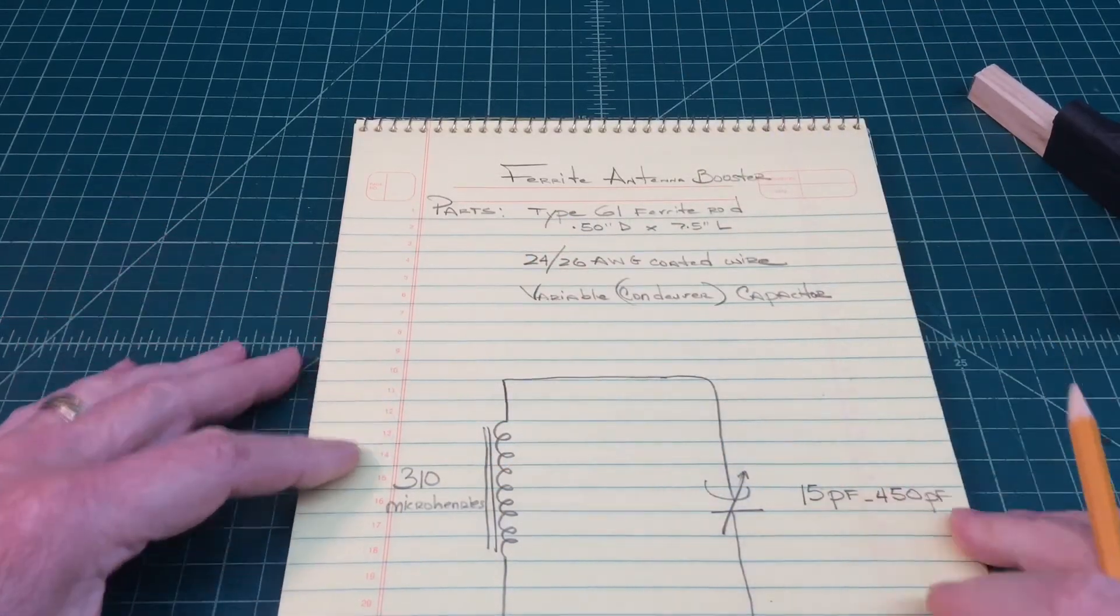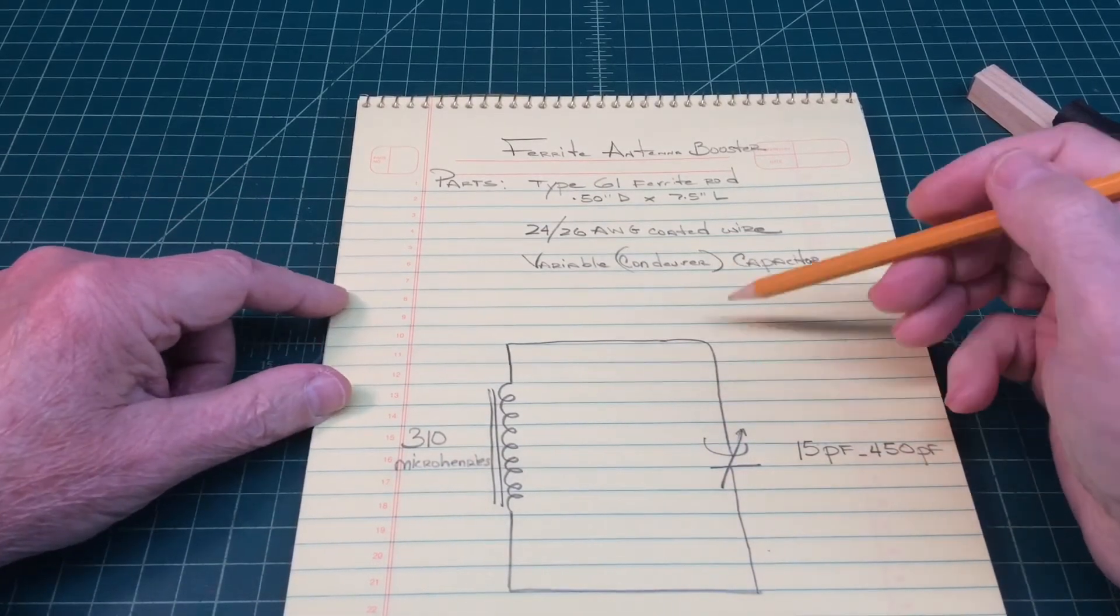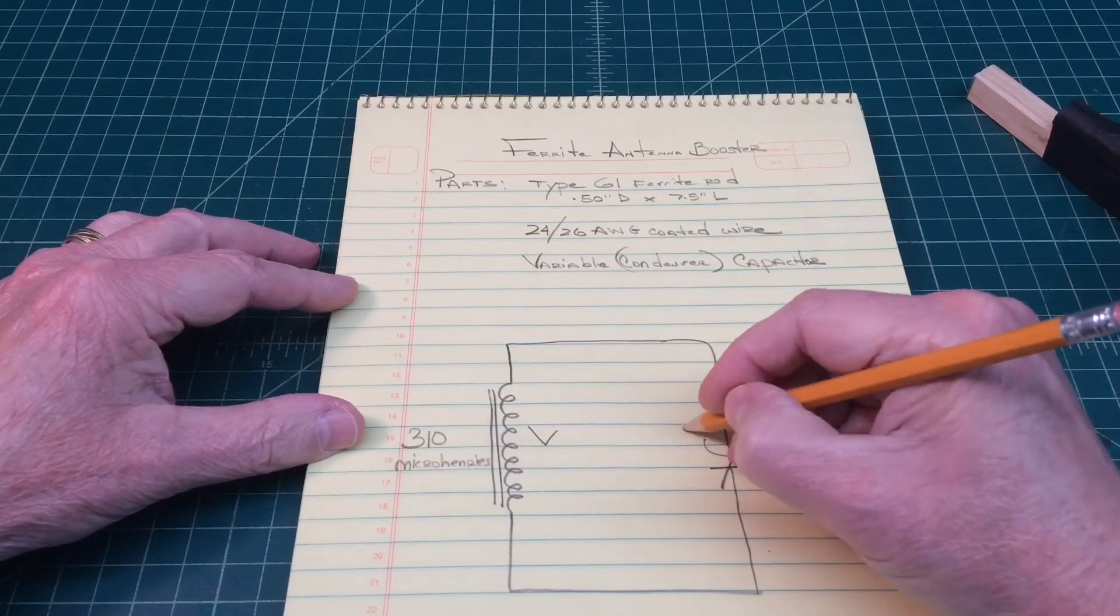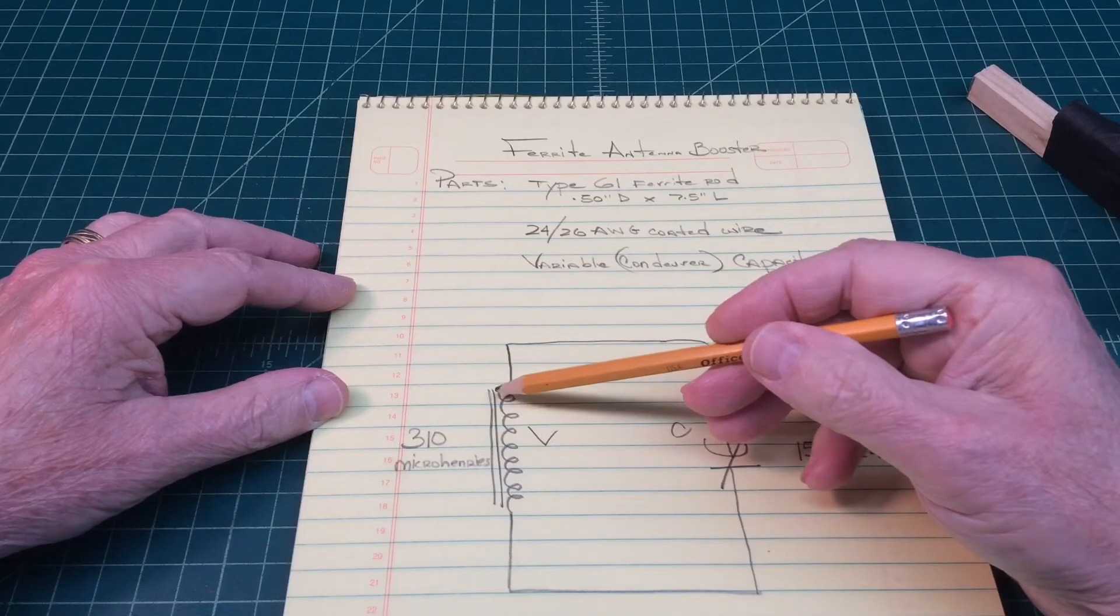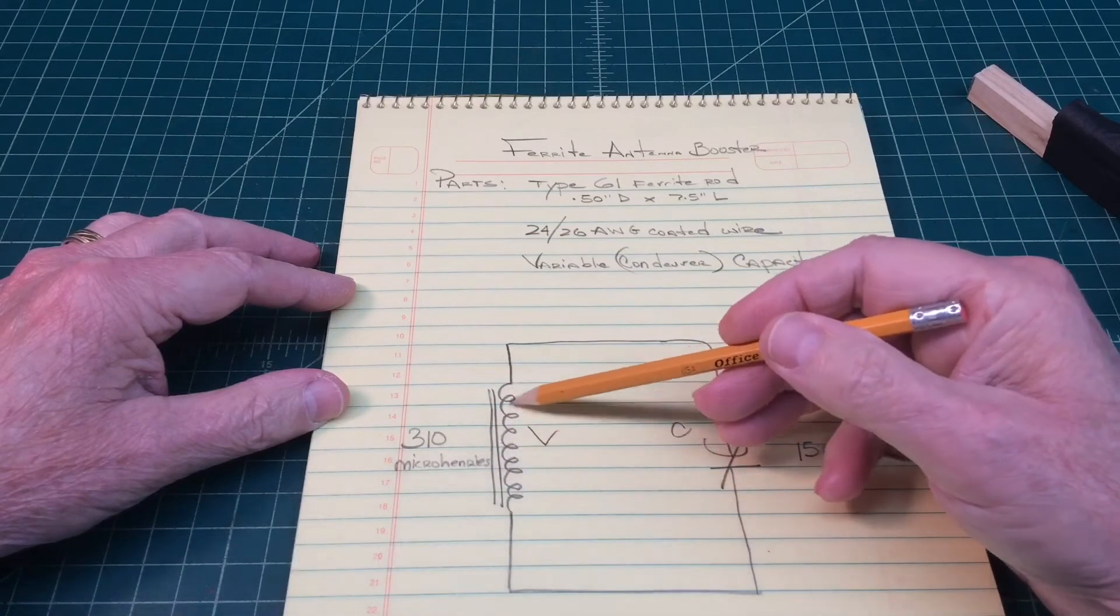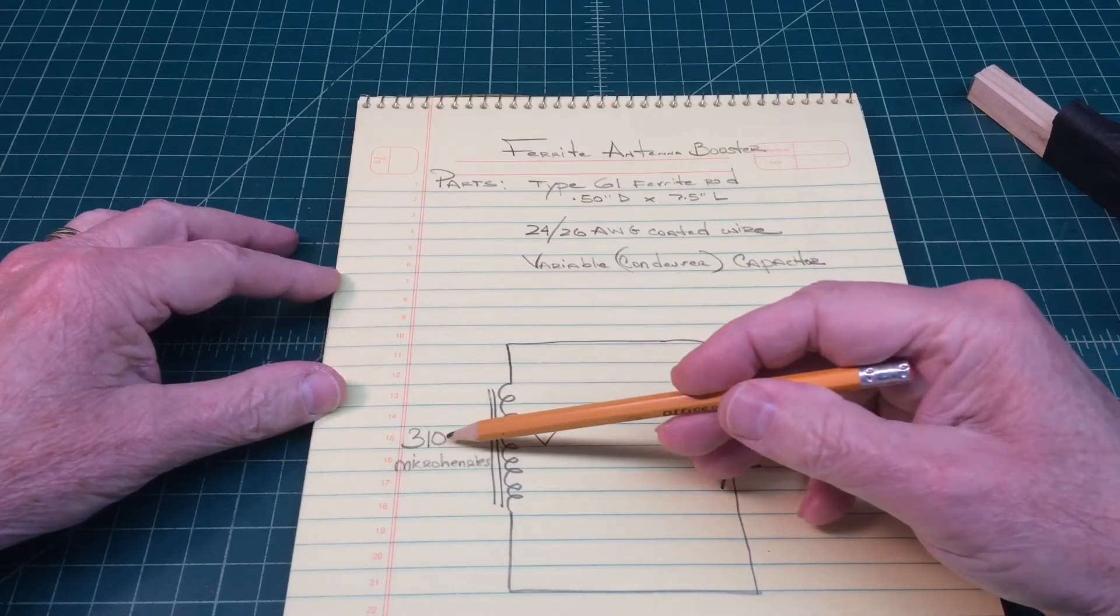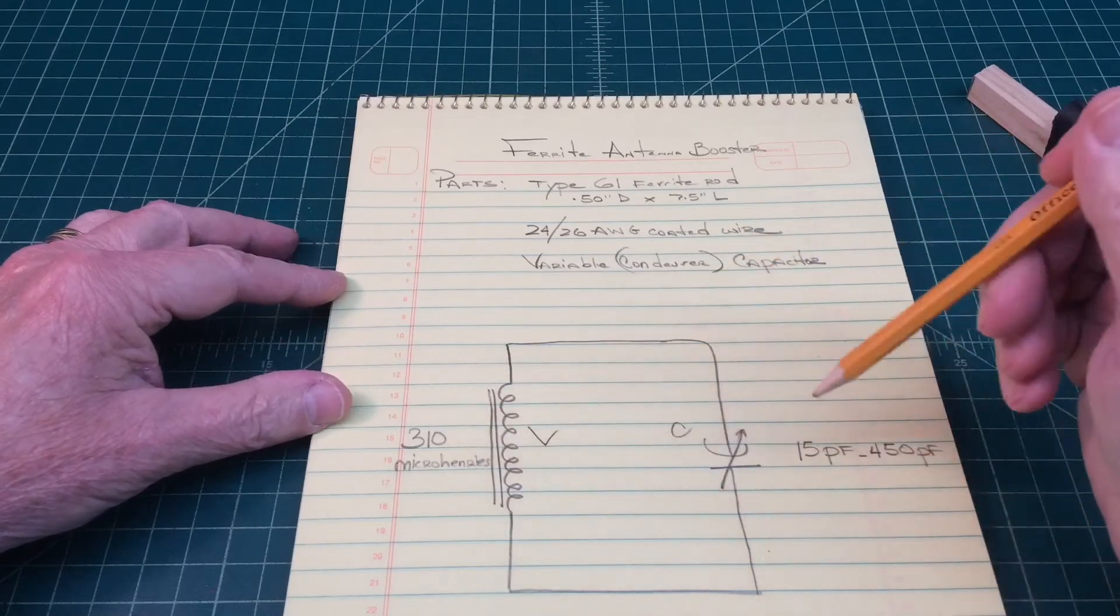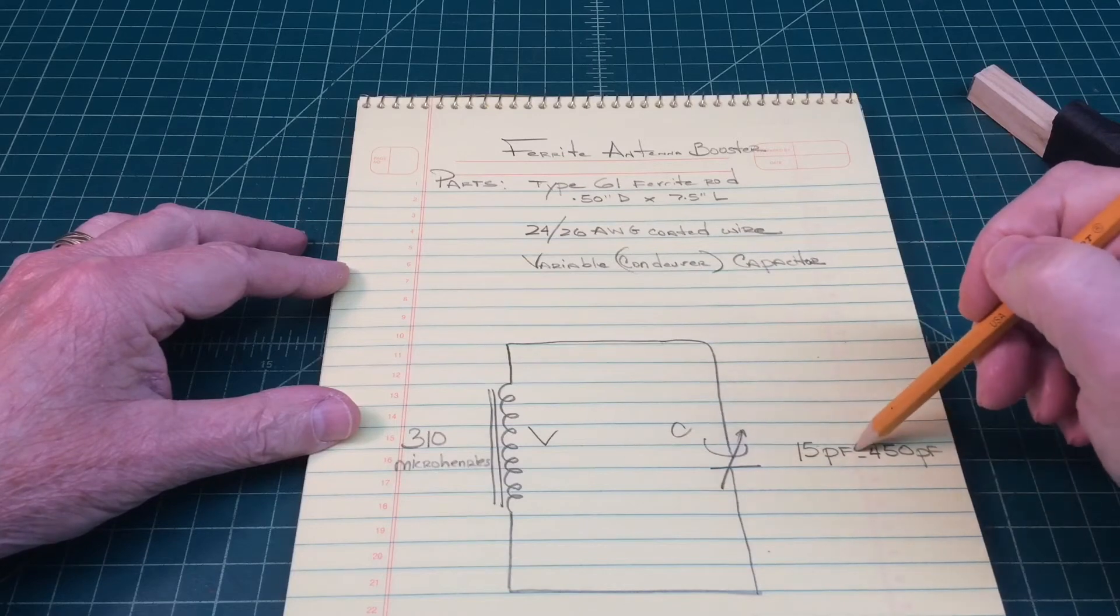Here's the simple schematic. Hopefully this is showing up. It's nothing more than just a tuned circuit here with L and C. And you can see that I've got my type 41 ferrite here on this side. The coil wound all the way through, and checking it somewhere just north of 300 microhenries. And the variable capacitor.